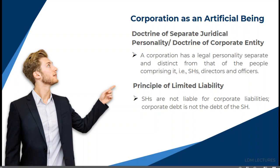Since the corporation is a person, does it also enjoy rights under the Bill of Rights? Section 1 of the Bill of Rights states no person shall be deprived of life, liberty, or property without due process of law — it does not distinguish between natural and juridical persons. A corporation, being a separate juridical person, does enjoy constitutional rights in the same way as natural persons — yes — except for the right against self-incrimination.